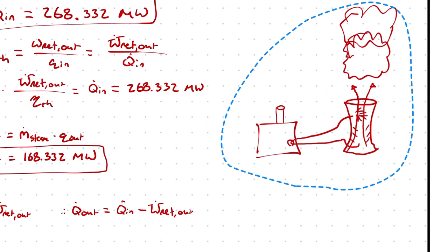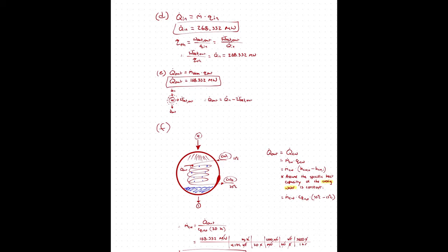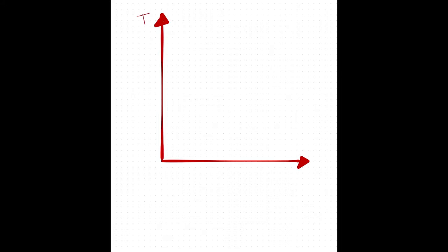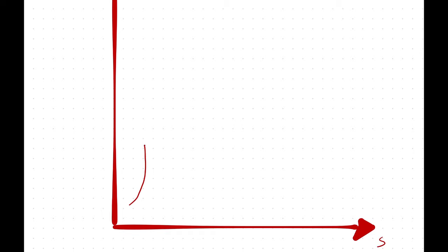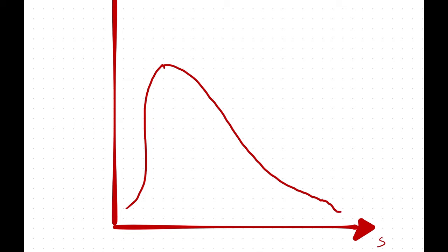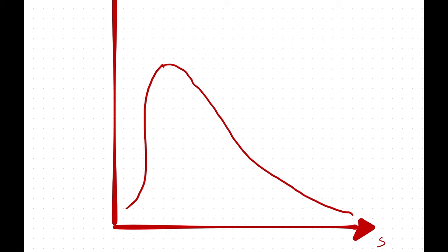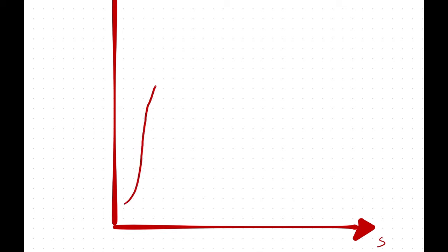That covers all the required parameters. Just for fun, let's draw a T-S diagram. I'll draw the saturation lines with a thicker line weight — a saturated liquid line on the left and a saturated vapor line on the right — and two lines of constant pressure: the low pressure at 0.075 bar and the high pressure at 80 bar, both going up and to the right.